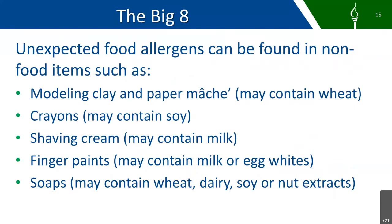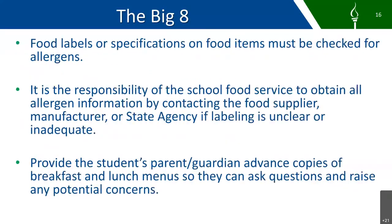Food labels or specifications on food items must be checked for allergens. It is the responsibility of the school food service to obtain all allergen information by contacting their food supplier, manufacturer, or state agency if labeling is unclear or inadequate. You should provide students, parents, and guardians advance copies of breakfast and lunch menus so they can ask questions and raise any potential concerns they may have about the foods being served.